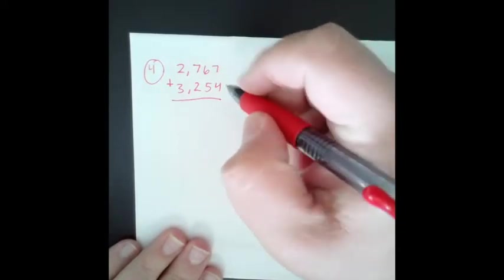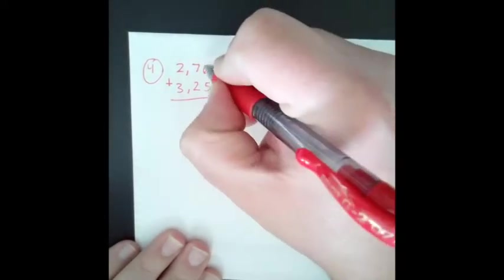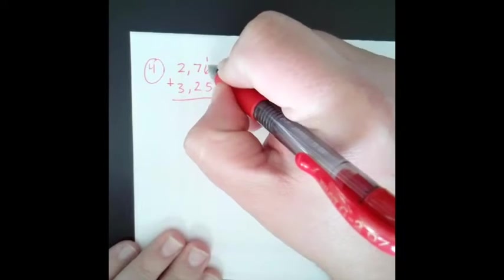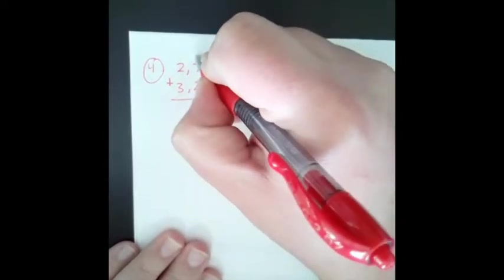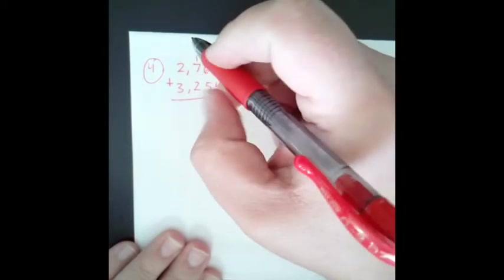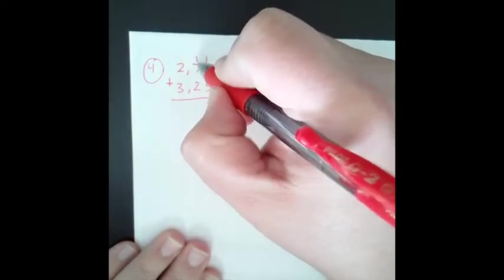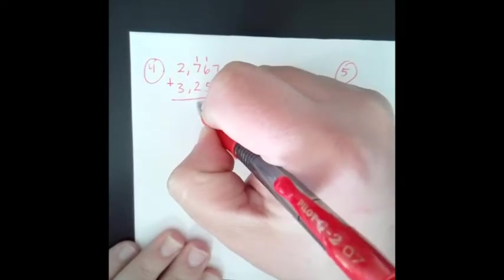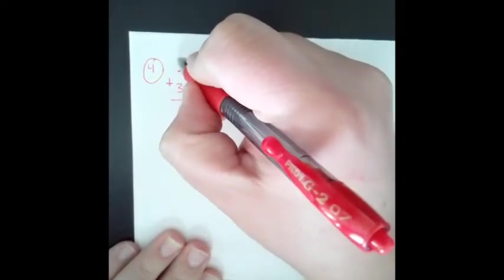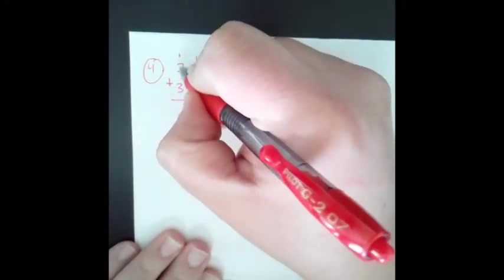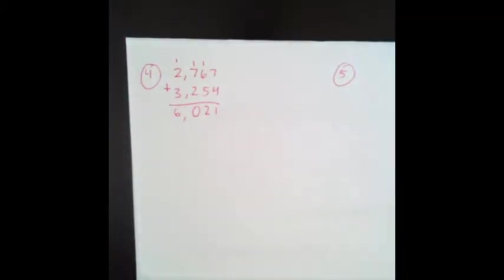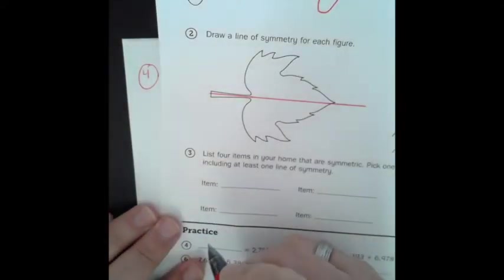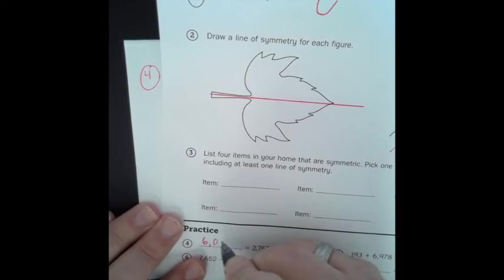7 plus 4 is 11. Carry the 1. 7 plus 5, that is 12. Carry the 1. 7 plus 1 plus 2 is 10. Carry the 1. 1, 2, 3, 4, 5, 6. So the answer for that is 6,021. So I'm going to go ahead and transfer my answer to 6,021.